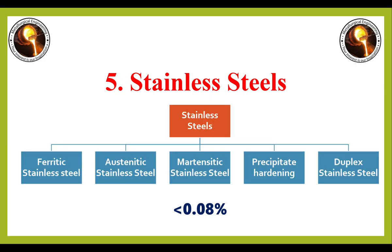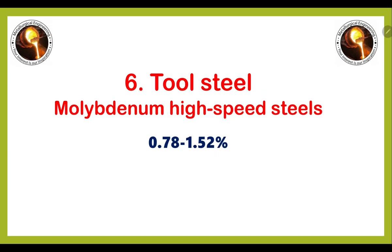The fifth one is stainless steel, which is categorized into five parts: ferritic stainless steel, austenitic stainless steel, martensitic stainless steel, precipitation hardening stainless steel, and duplex stainless steel. Typically in all types of stainless steel the carbon percentage is less than 0.08 percent.